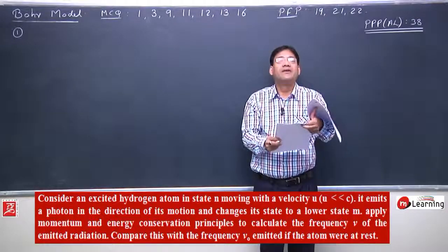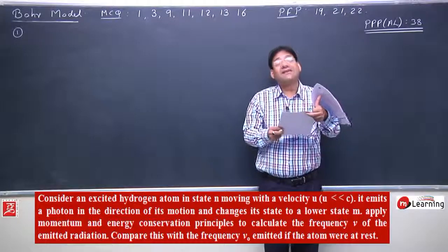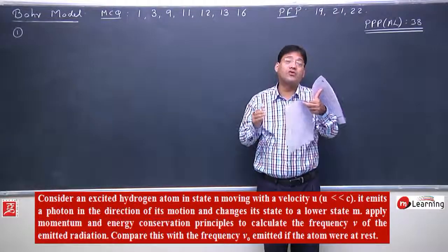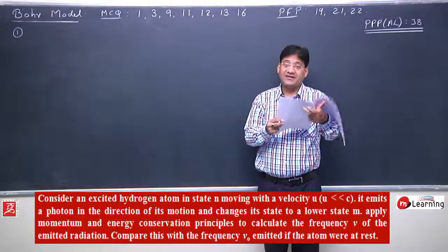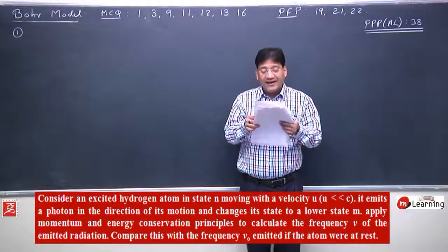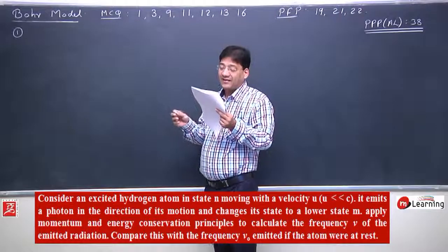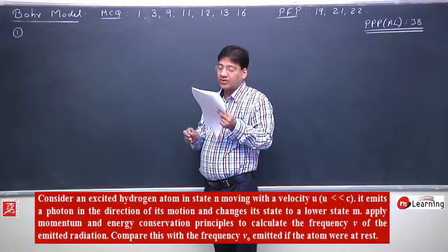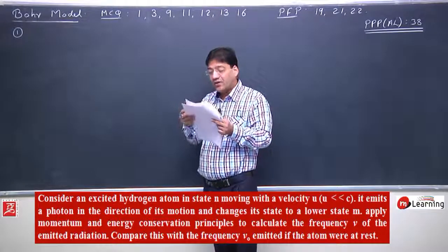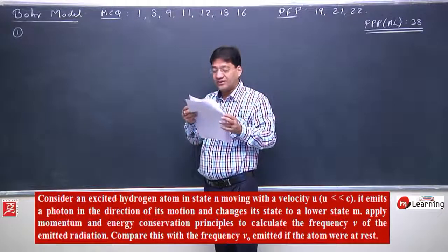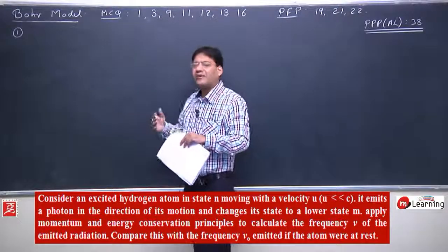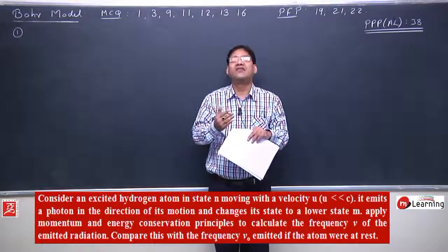Both questions are the same — the same thing is being asked. And observe — the last problem of the advanced level PFP has been placed as the first multiple choice question. We will use its conclusion to answer this. Consider an excited hydrogen atom in state N moving with velocity U. It emits a photon in the direction of its motion and changes its state to lower state N. Apply momentum and energy conservation to calculate the frequency ν of the emitted radiation. Compare this frequency ν with ν₀ emitted when the atom is at rest.